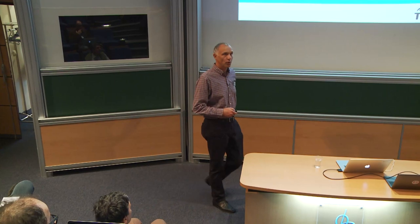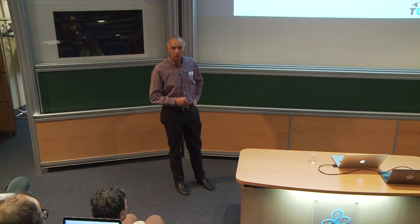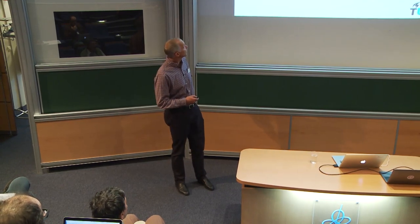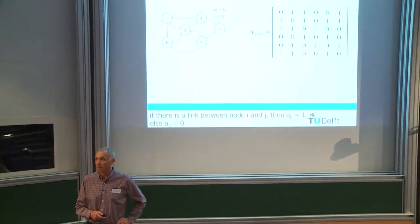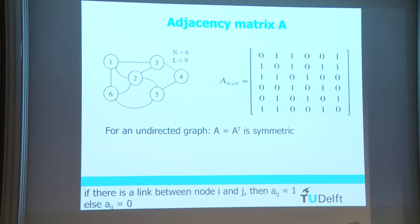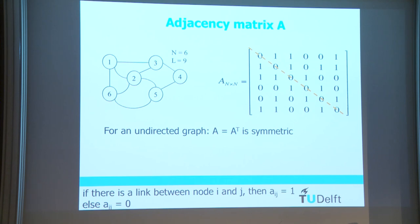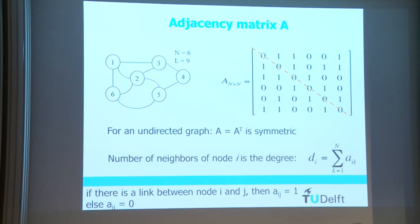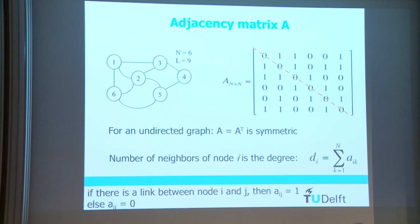Many of you already know an adjacency matrix. If you have a simple graph with six nodes and nine links, you can represent this as an adjacency matrix, which is a zero-one matrix. I only talk about adjacency matrices which are symmetric — so it's undirected. The adjacency matrix gives only the existence of links. The diagonal elements are zero, so I also exclude self-loops. An important characterizer of any graph is the degree, which is the row sum for each node.